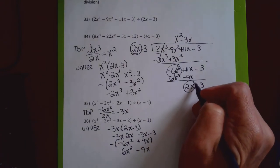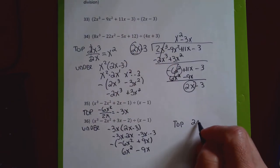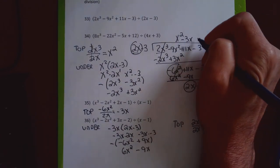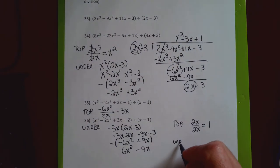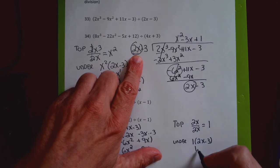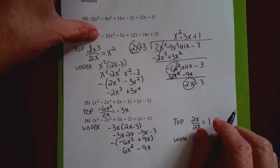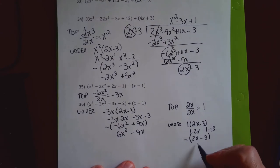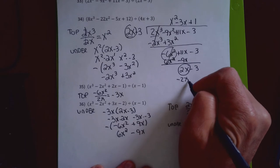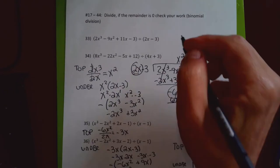I need to subtract, so I find the opposite: the opposite of negative 6x squared is positive 6x squared, the opposite of positive 9x is negative 9x. I write positive 6x squared and negative 9x under the division bar. The 6x squared terms cancel; 11x minus 9x is 2x. I bring down the negative 3. Last step: I take 2x divided by 2x — something divided by itself is 1. I put positive 1 on top, multiply it by 2x minus 3, and after subtracting, both 2x and minus 3 cancel. Remainder of 0. The answer for problem 33 is x squared minus 3x plus 1.